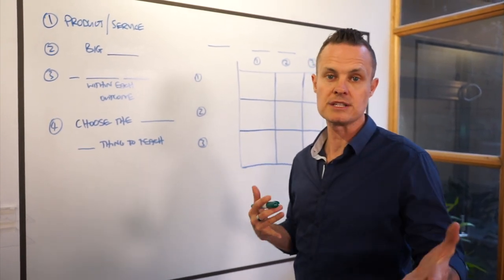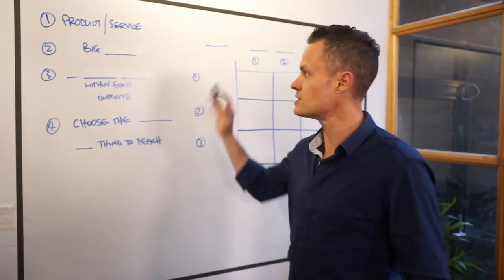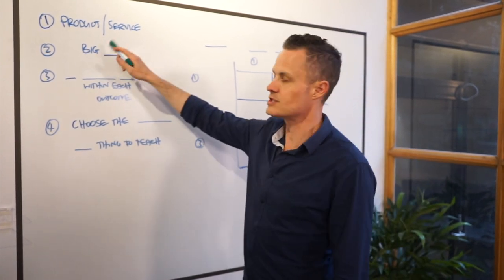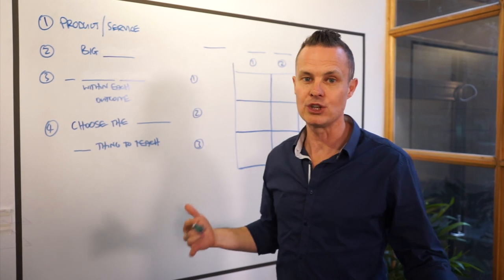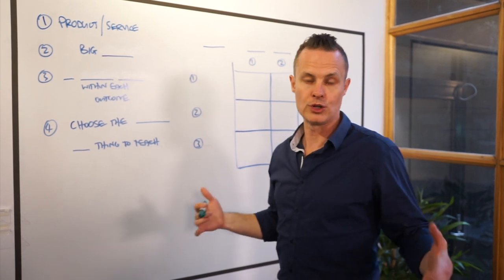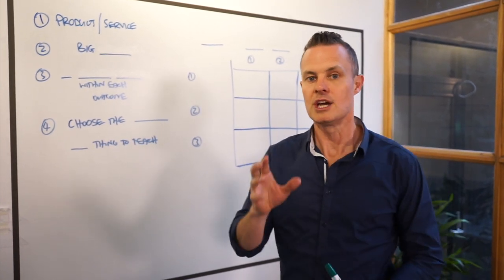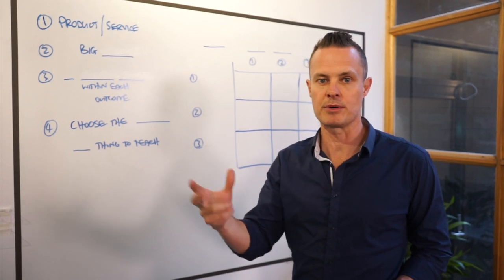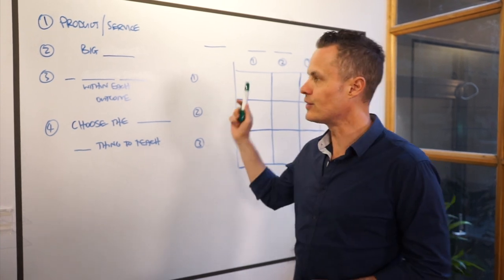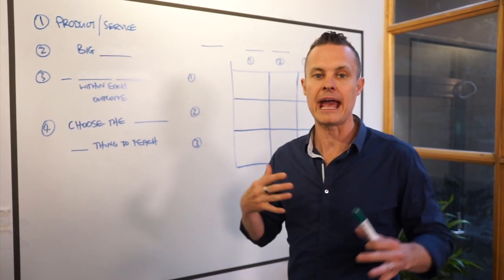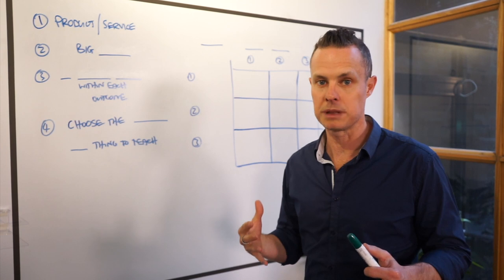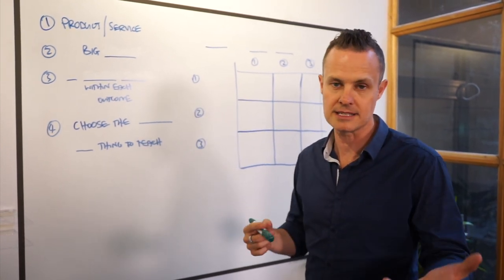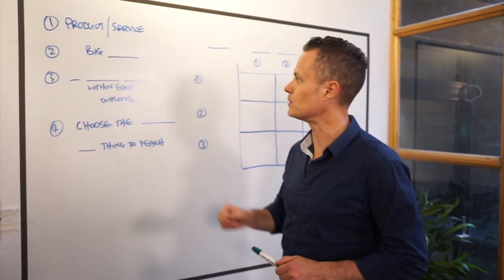The first thing is deciding what piece of content to produce — this is the framework I go through all the time. The first step is to decide on the product or service you want to promote. Every piece of content should tie back to a product or service. In this case, we're going to be promoting our SEO plans, because that's the example from the Mavericks Club member I was talking to.